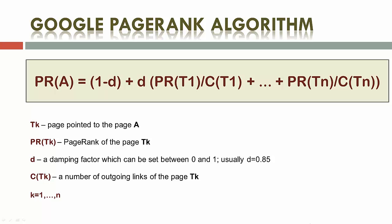In the algorithm of page rank calculation, links from all pages are not counted equally. If page A has links from the pages T1 to Tn, the page rank of page A was originally defined by the function you see on this slide, where Tk is a page pointing to page A, and PR(Tk) is the page rank of page Tk. D is a damping factor which can be set between 0 and 1.